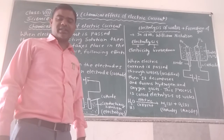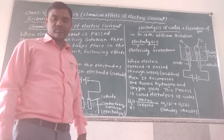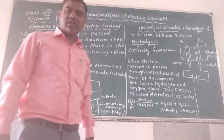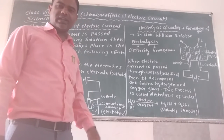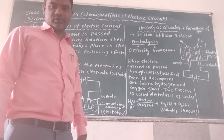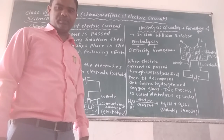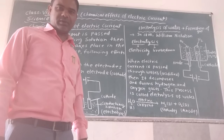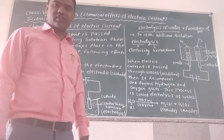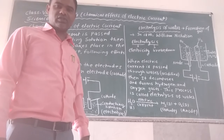Here we will see that when electric current is passed through a chemical substance — that means through a conducting liquid or through a conducting solution — then what effects are produced. We know that when electric current is passed through a conductor, three types of effects can be produced: heating effect, magnetic effect, and chemical effect of electric current.